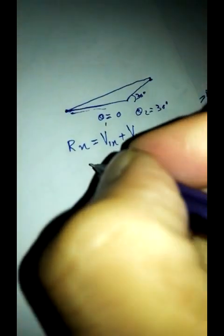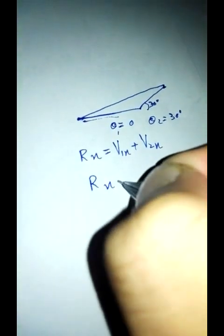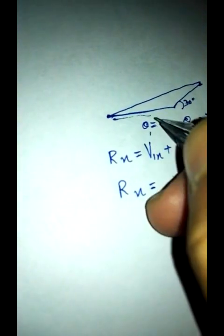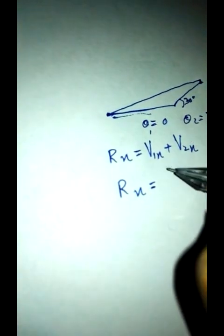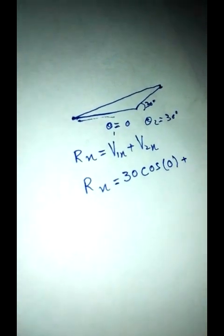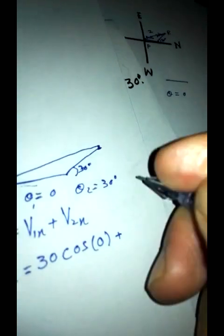So Rx will be equal to V1x, which is the first distance, 30 into cos of 0, plus V2, the second distance, 20 into cos of 30.